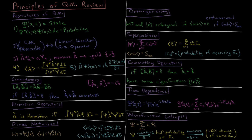Beyond the postulates, there are many other general principles of quantum mechanics. Operator commutators involve the difference between operator B then operator A acting, versus operator A then operator B acting. If this commutator, indicated by square brackets with a comma, is zero, then A and B are said to commute. The most famous commutator is between position and momentum, which equals minus i h-bar — so position and momentum do not commute. The Heisenberg uncertainty principle falls directly out of this property.